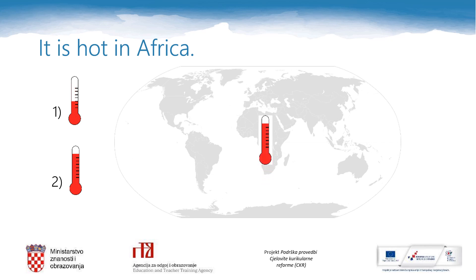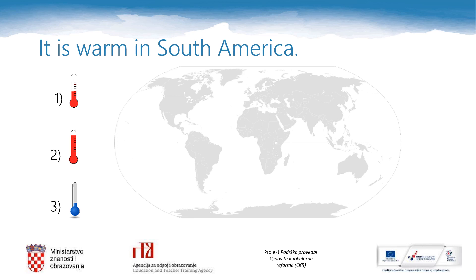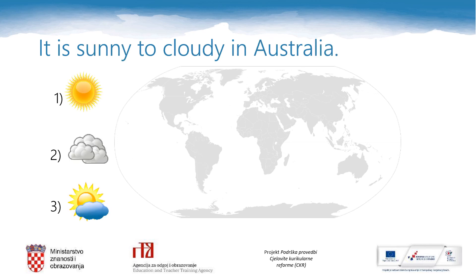It is warm in South America. Warm means the temperature is not so high and not so low, so we need picture number one. The continent is South America. It is sunny to cloudy in Australia — number one means sunny, number two cloudy, number three sunny to cloudy, so we need number three. The continent is Australia.